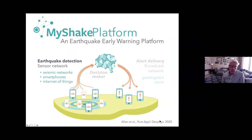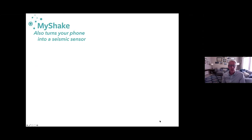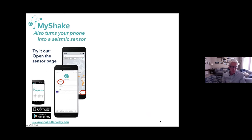The most exciting piece of MyShake is the earthquake detection side — using the phones themselves to detect earthquakes. When you download the MyShake app, you not only receive warnings in California, but it also turns your phone into a seismic sensor.